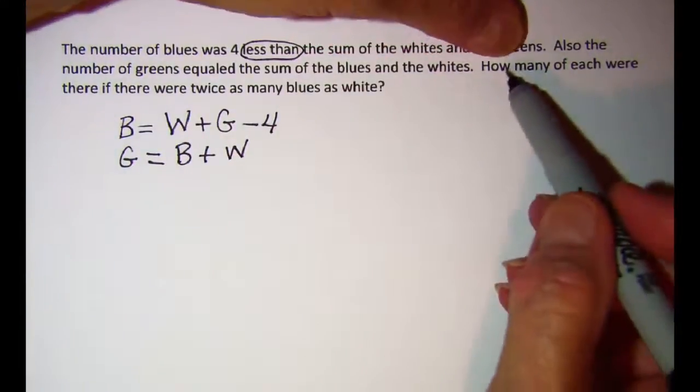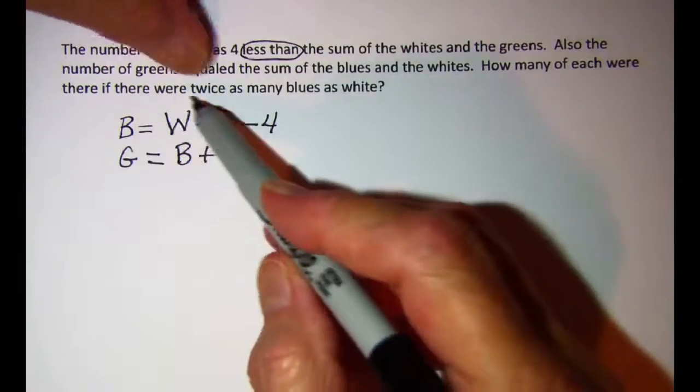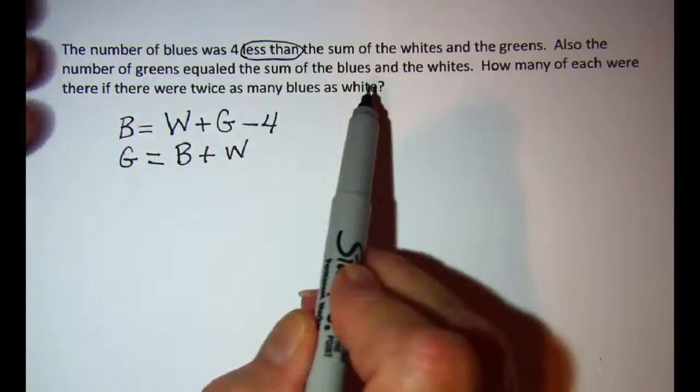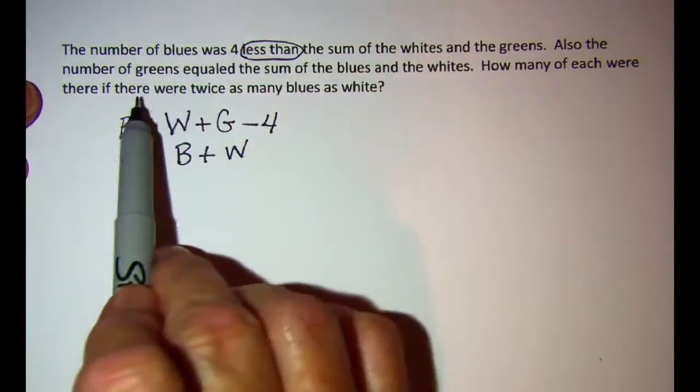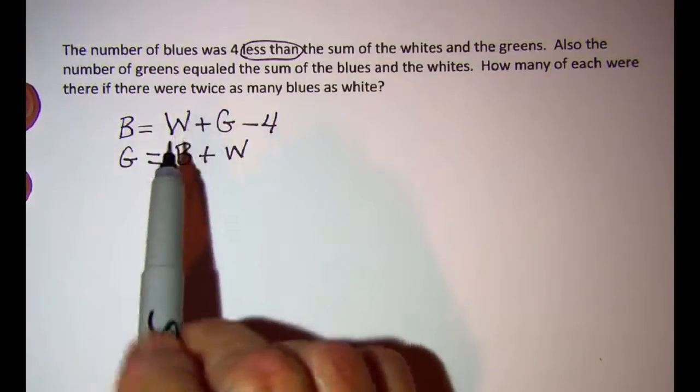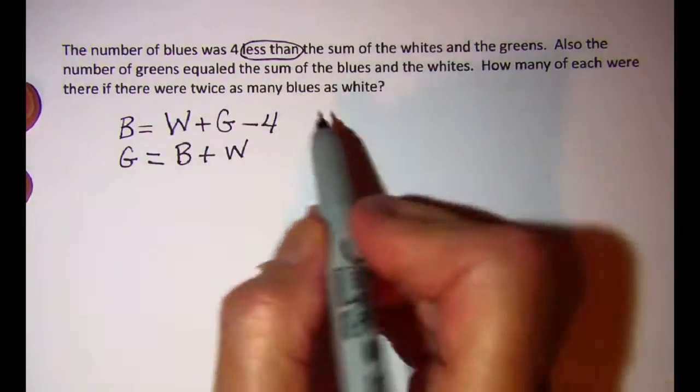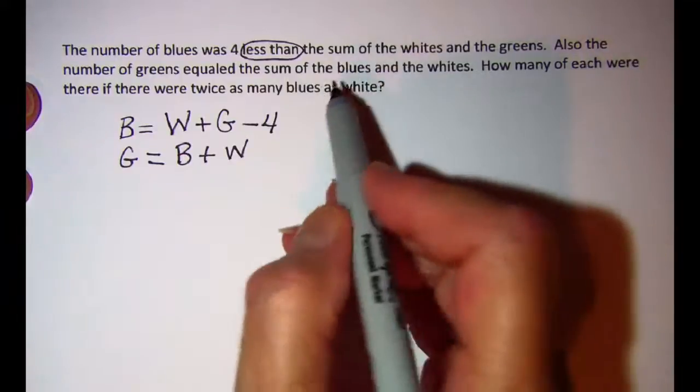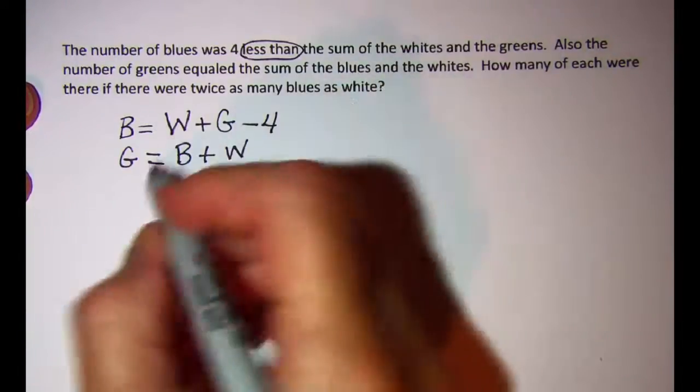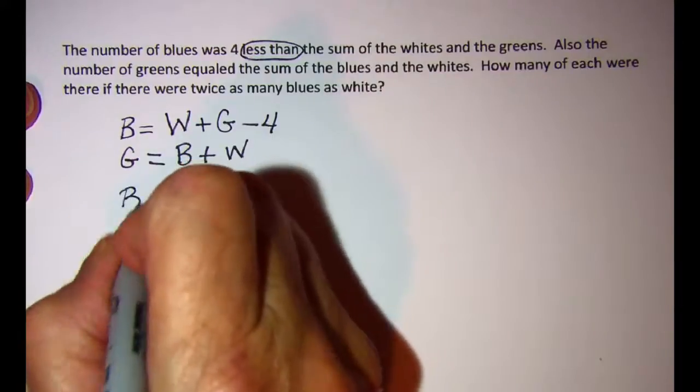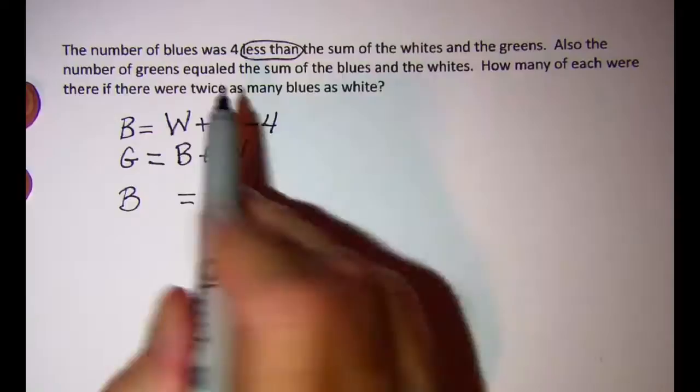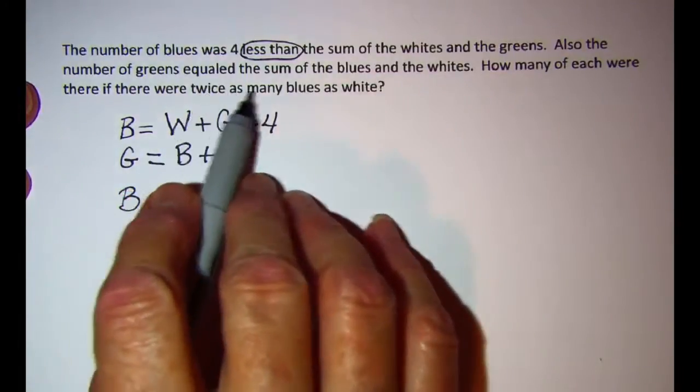And then how many of each were there if there were twice as many blues as white? Now this sentence sometimes trips students up. Remember that when you write an equation you're saying that two things are exactly equal. So if I wrote blues equals whites, that would be if they were equal.